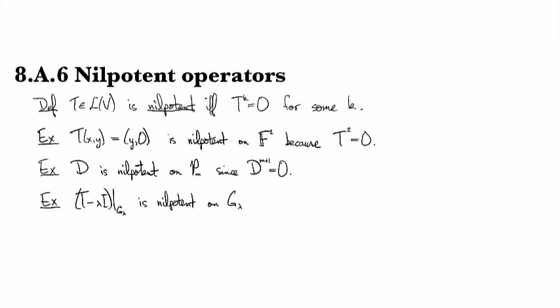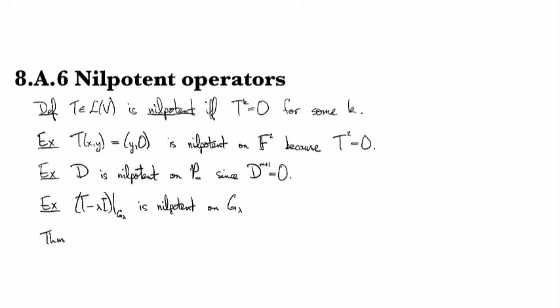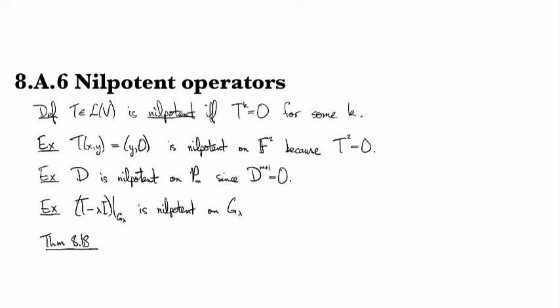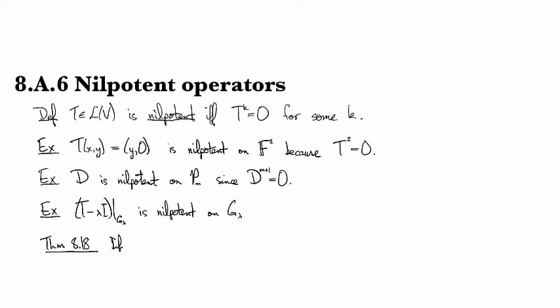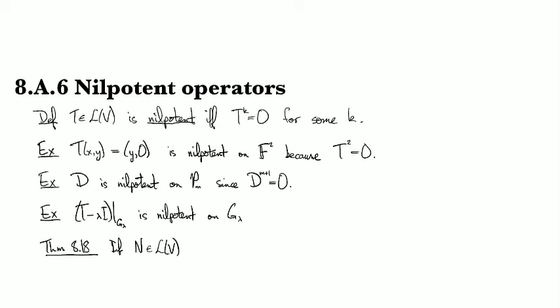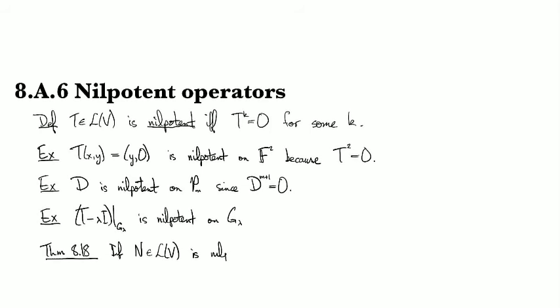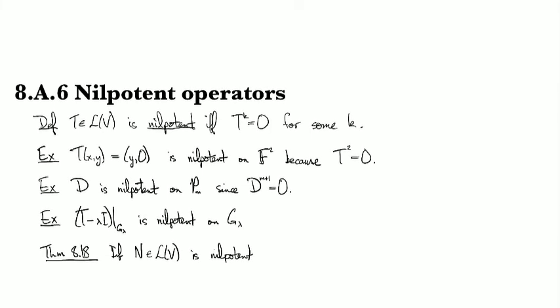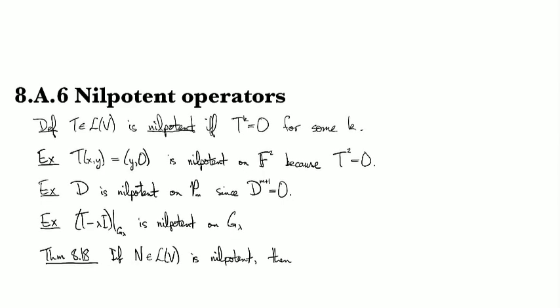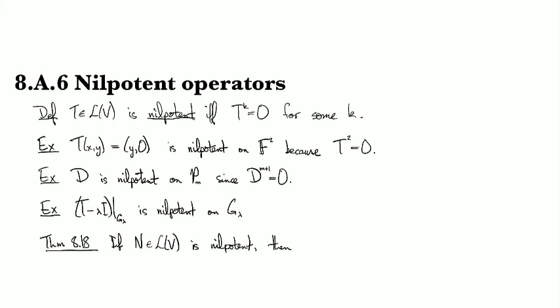So now we have a quick result, theorem 8.18. If we have a nilpotent operator N, then in terms of how many times you have to iterate this operator in order to get the zero one, the dimension of the vector space will always do it.